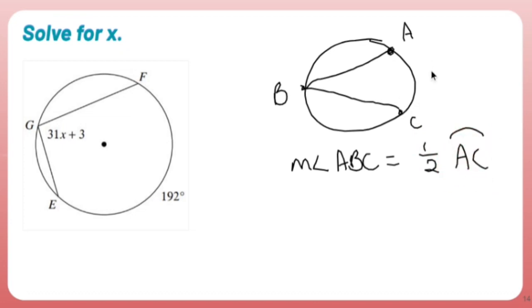So if AC was like, I don't know, 60, you would be 30. Okay, so the way I'm going to view this is this guy, this inscribed angle, is going to be half of 192.